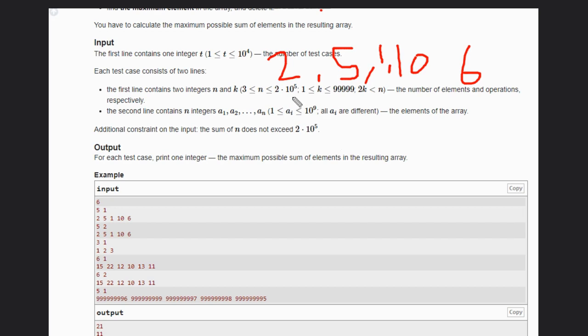So we will delete 2 and 1. If we delete 2 and 1, what will be the answer? The remaining will be 5, 10, and 6, so the answer will be 21.